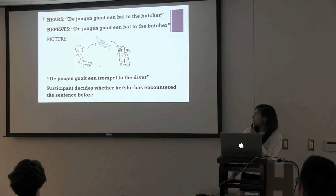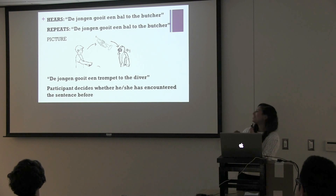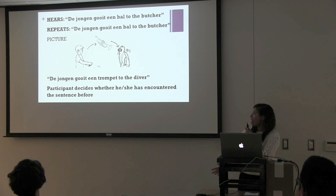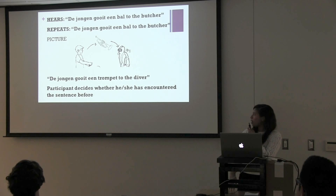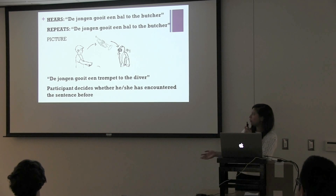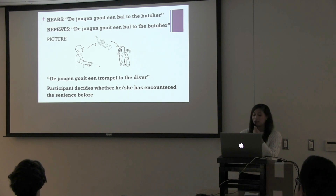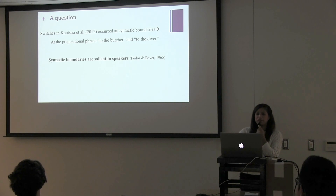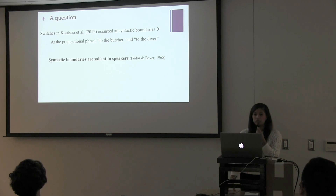An example from their study: participants would hear — excuse my Dutch, I do not speak Dutch — 'de jongen, guit, en bal, to the butcher,' and then they would have to repeat out loud the same sentence. Then when presented with a following picture and the sentence 'de jongen, guit, en trumpet, to the diver,' they had to decide if they had encountered the sentence before. A question could be: is it surprising that priming occurred in their study, given that normally the Dutch speakers are not code switchers?